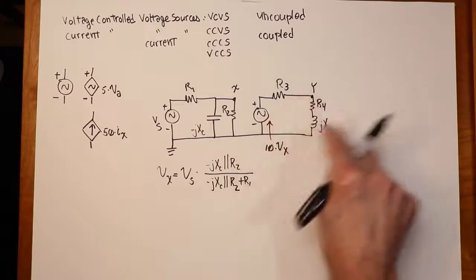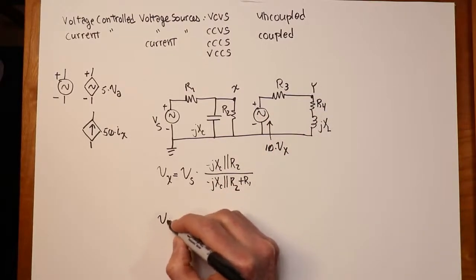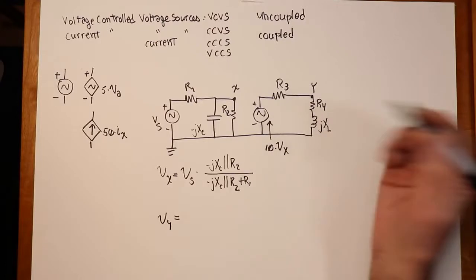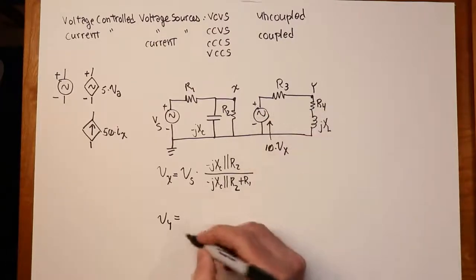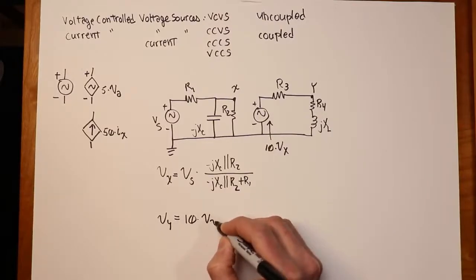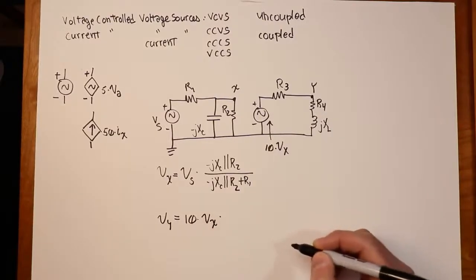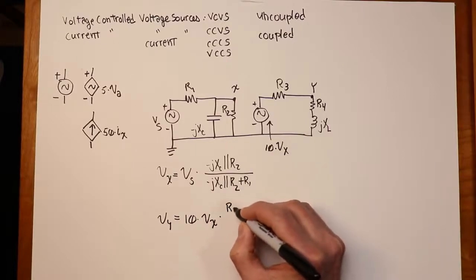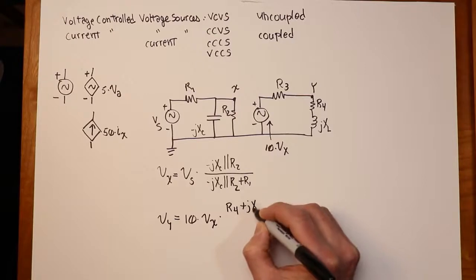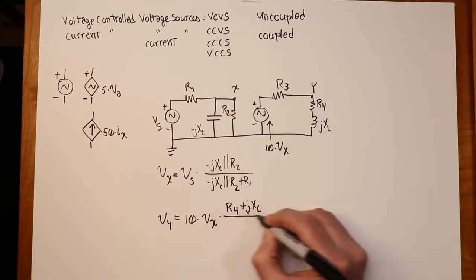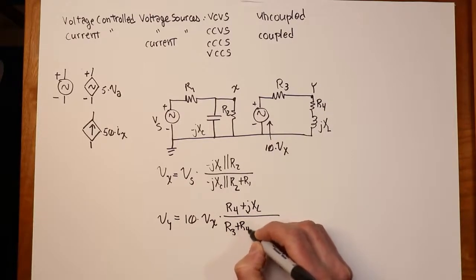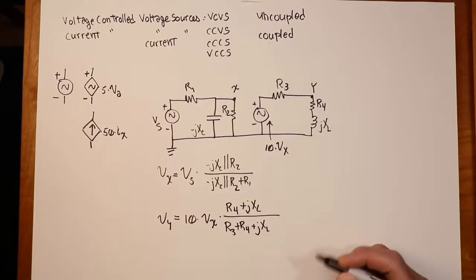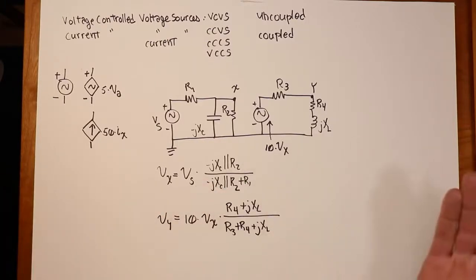And then to find VY, I can do another voltage divider. So we take the thing that we have an interest in, which is this 10VX, and we multiply it by the divider, the thing we're interested in, R4 plus JXL, divided by the total impedance, which is R3 plus R4 plus JXL. And we come up with some particular value.